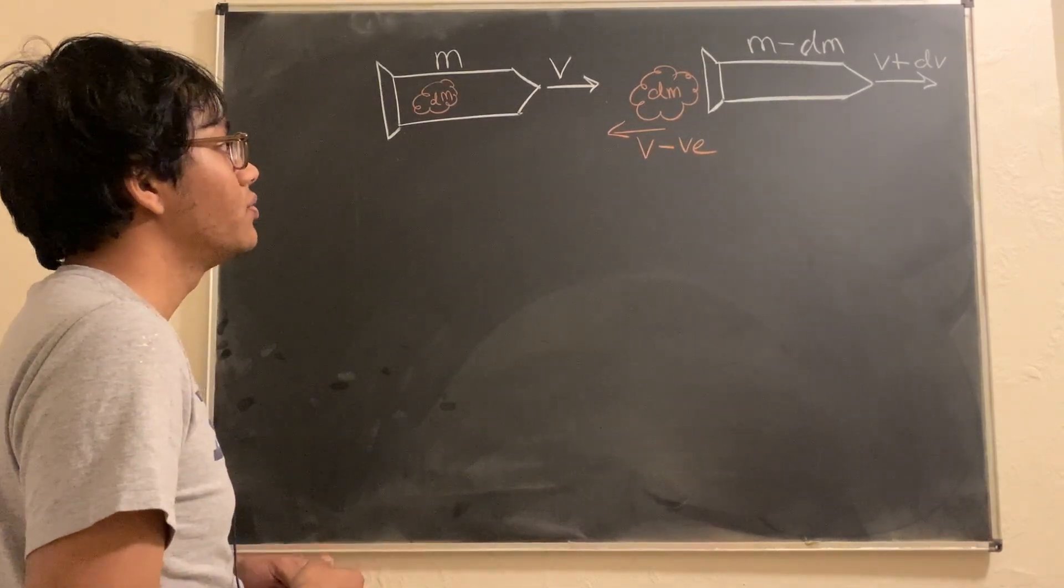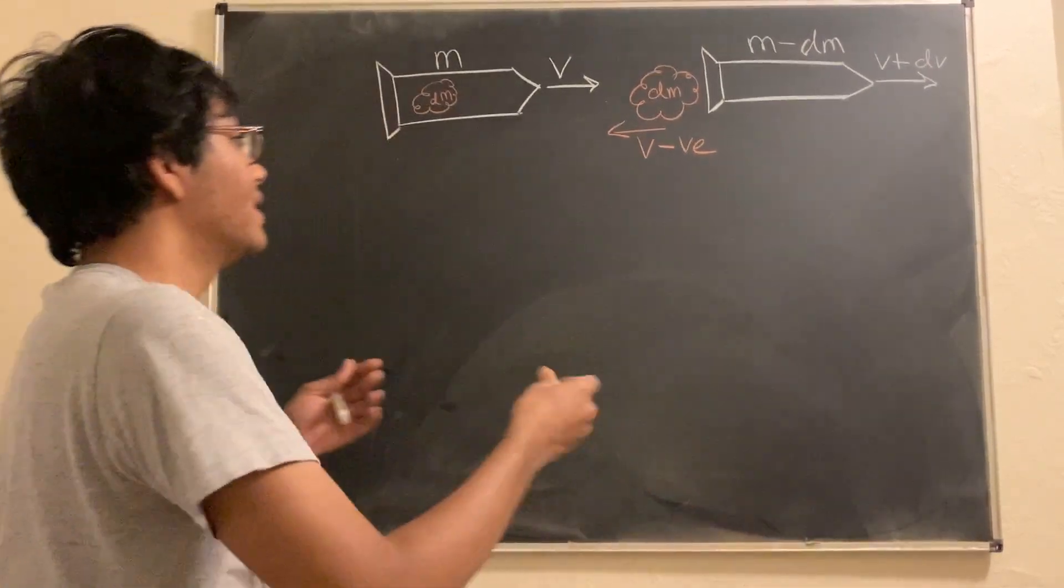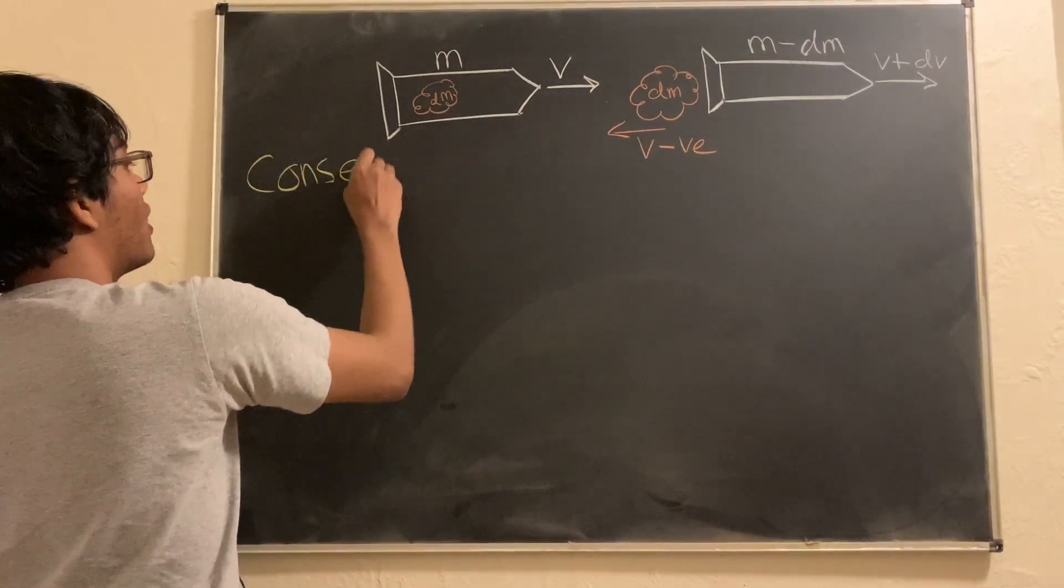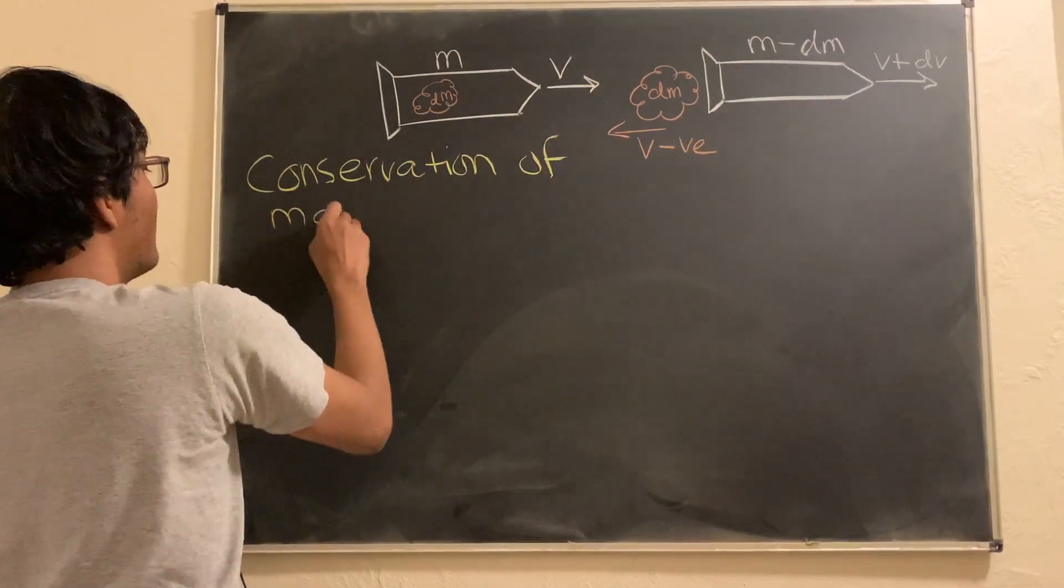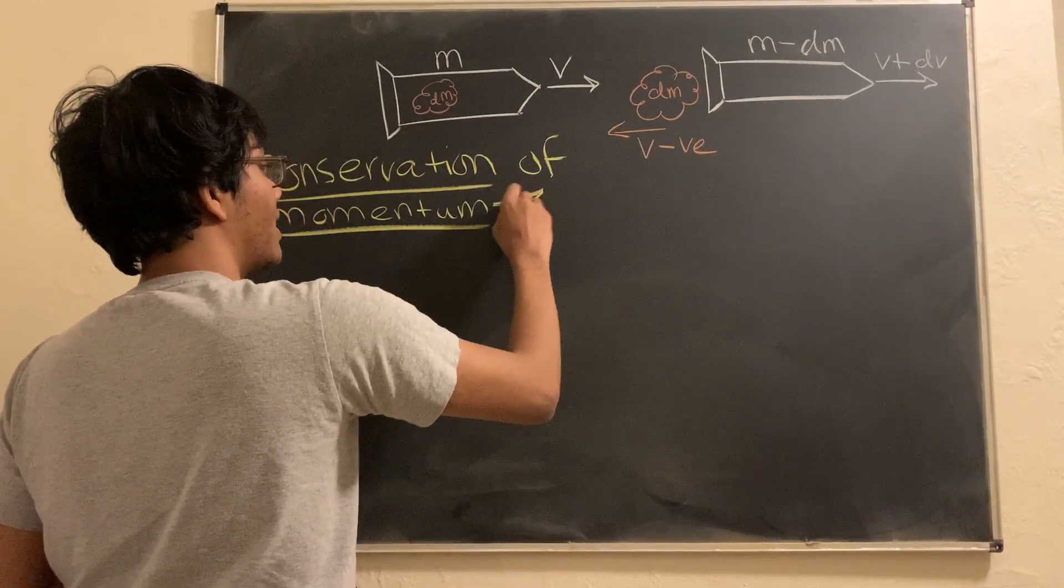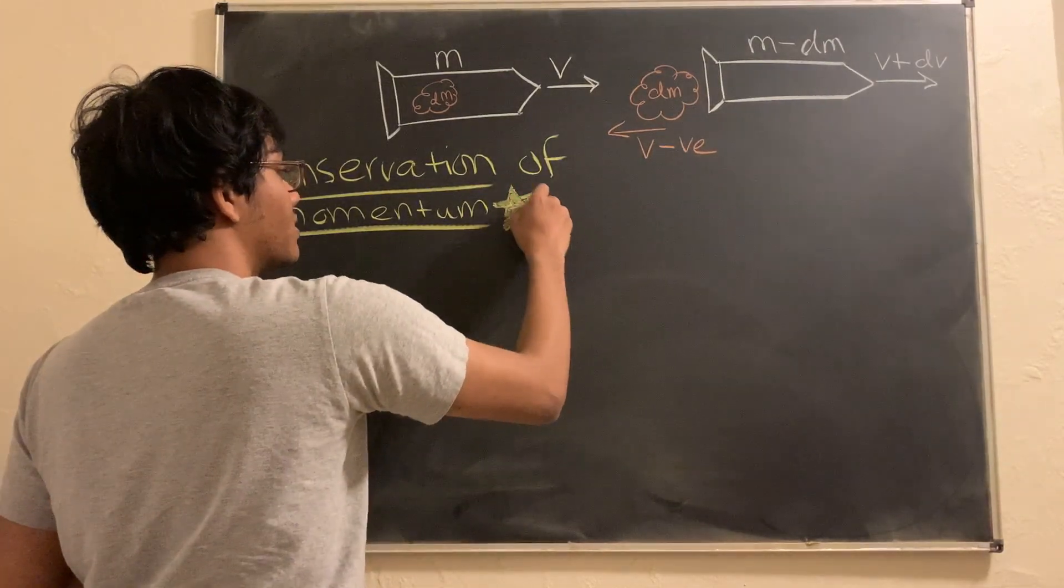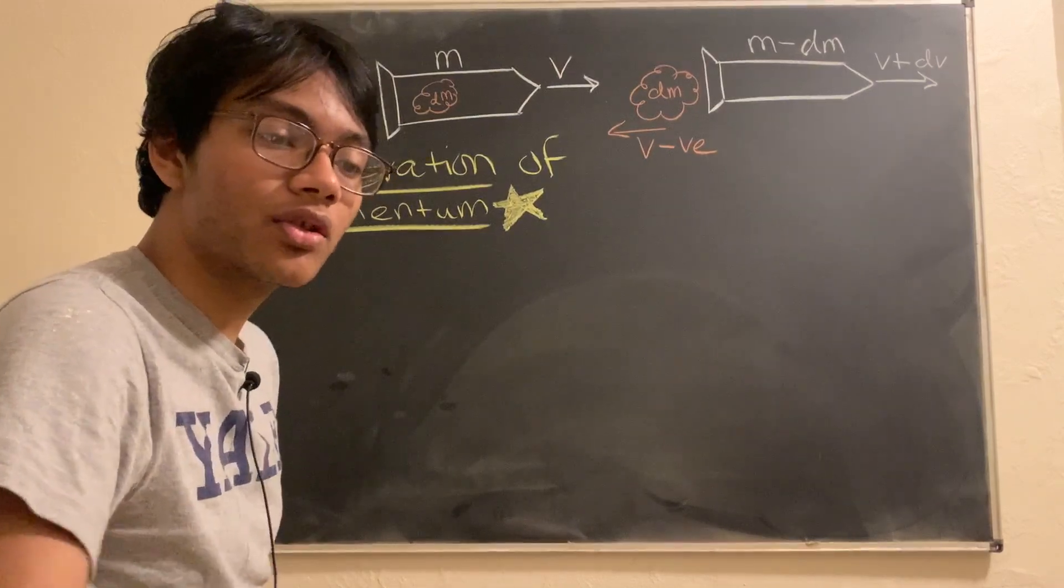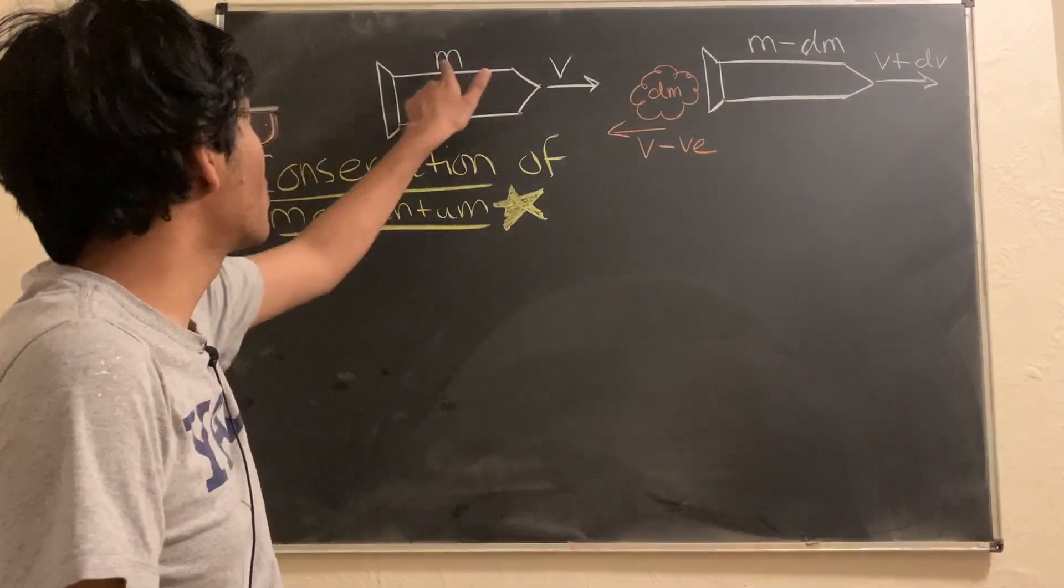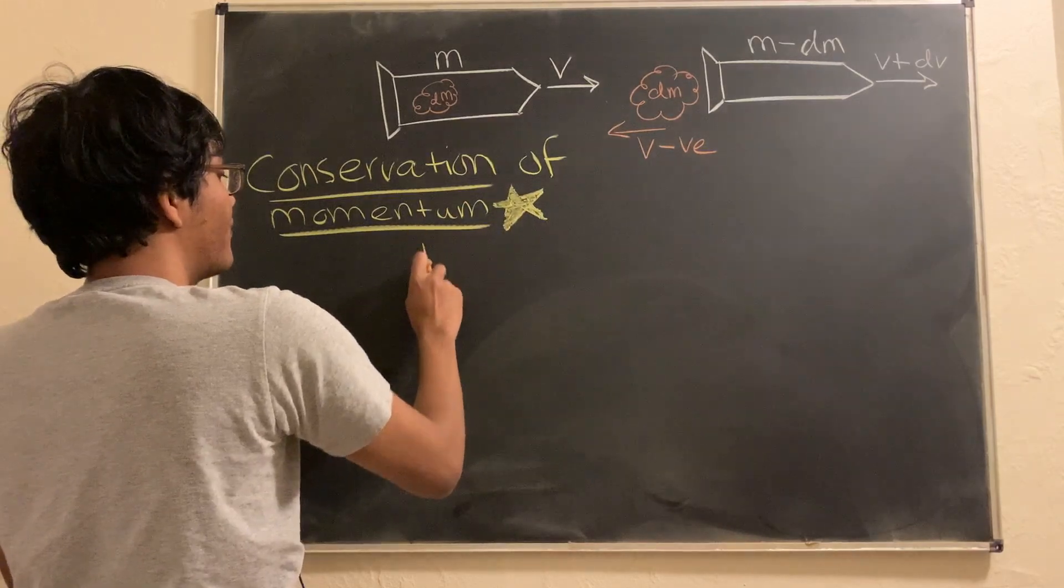Now, what we want to do is use the conservation of momentum to get a sense of what's really happening in this dynamical system. First thing we're going to do is look at the before picture. What's happening before? Before, we've just got the rocket with the mass M moving with the velocity V. So, we're just going to have MV.